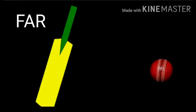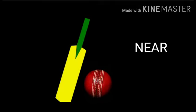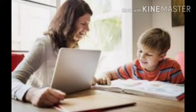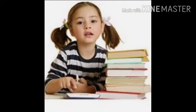In this example, we can see there is one bat and one ball. We can also notice that the ball is placed quite far from the bat. And over here, we can see that the ball is placed near the bat. So we understand that when the objects are placed at a good distance from each other, that time we can say it is far. And when the objects are placed together or close to each other, then we can say it is near.